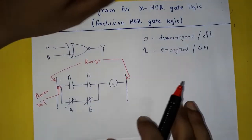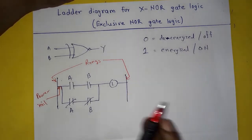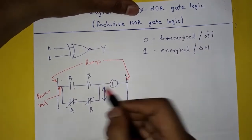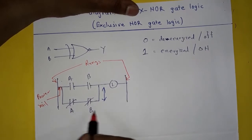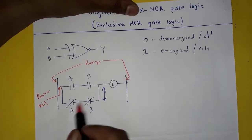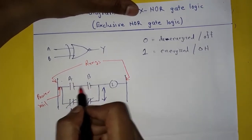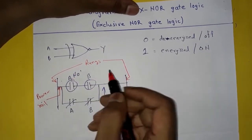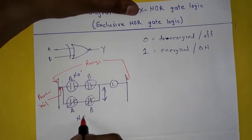In XNOR gate logic, when we use it in a ladder diagram, we always arrange the control relay or switch in parallel position like this, and we keep two adjacent switches in the same condition. Here, A and B are in normally open condition, and here it is in normally closed condition.